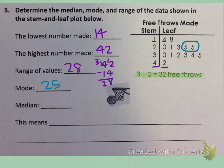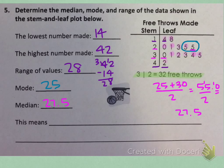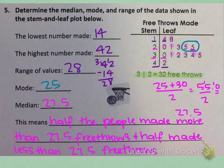Now we need to find the median and explain what it means. Start at the front, then go to the back, marking them off until you meet in the middle. The median is 27.5. That means half of the people made more than 27.5 free throws, and half of the people made less than 27.5 free throws.